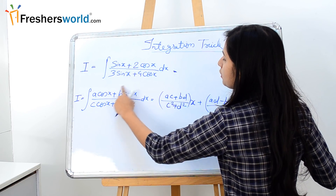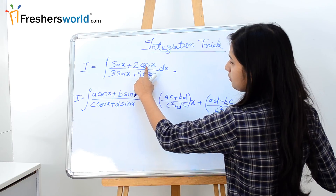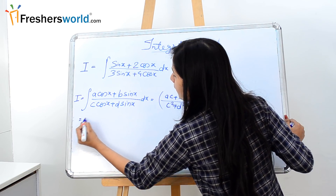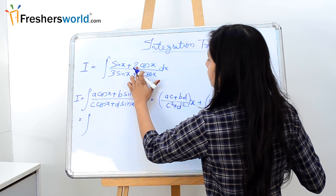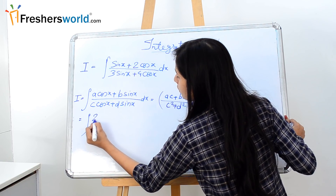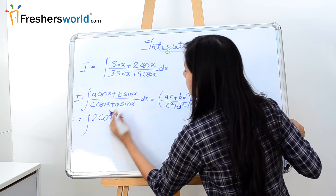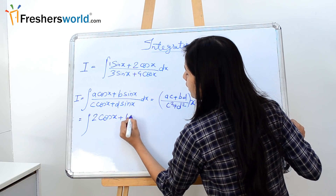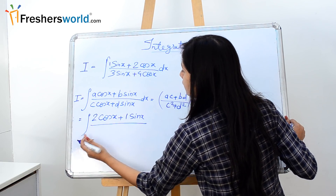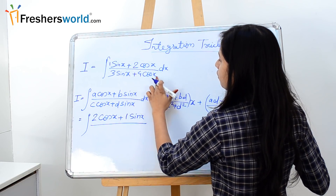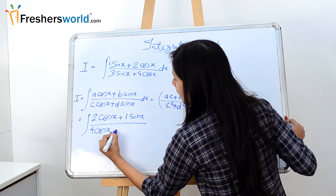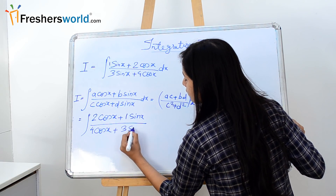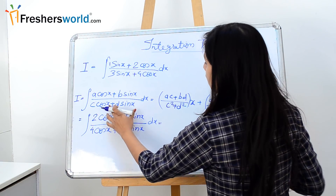Here we have a sin term, so we take the sin first, and for cos this will be the cos. So a·cos x — here we have 2cos x. Let's rewrite it as 2cos x + b·sin x. For b we don't have anything other than 1, so 1·sin x, divided by c·cos x which is 4cos x + d·sin x which is 3sin x, dx.